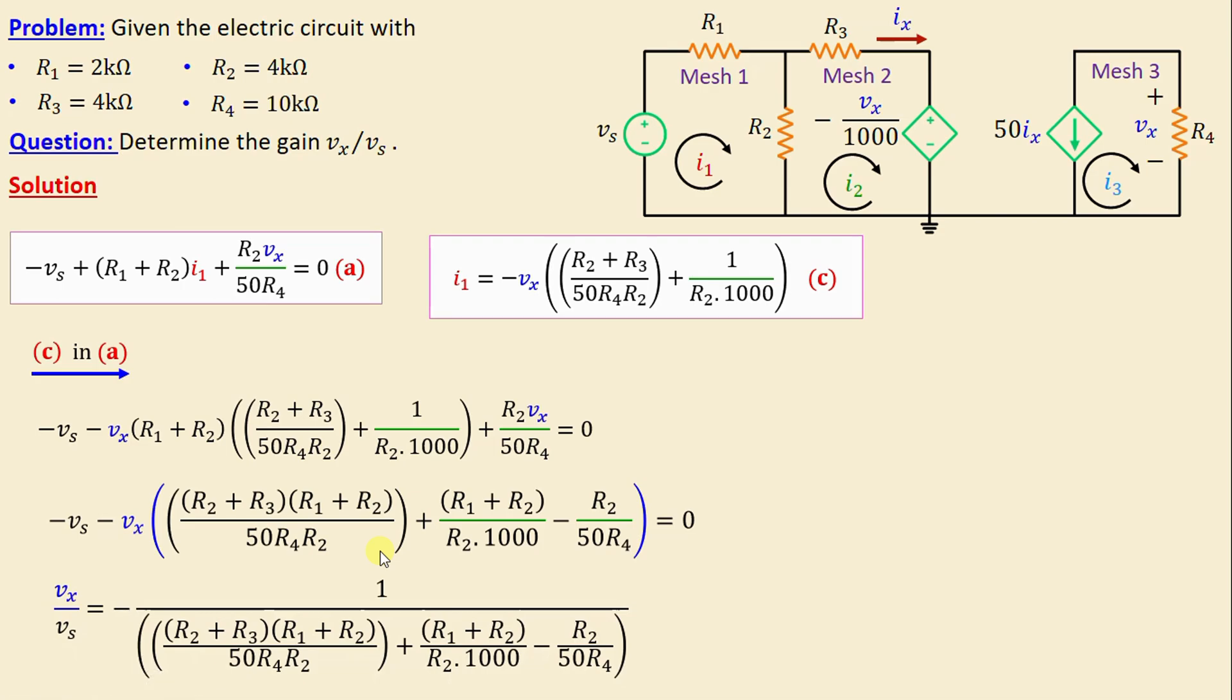Let's move on to the numerical application by replacing the resistors with their numerical values. We obtain the gain expression Vx over Vs is equal to negative 57.14. After completing the calculation, we conduct a simulation using SPICE to verify our results. Now let's proceed to the SPICE environment.